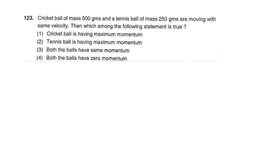Next question: A cricket ball of mass 500 grams and a tennis ball of mass 250 grams are moving with the same velocity. Which statement is true? Options: cricket ball has maximum momentum; tennis ball has maximum momentum; both have same momentum; both have zero momentum. Here we apply momentum.